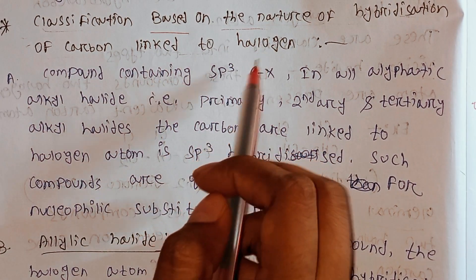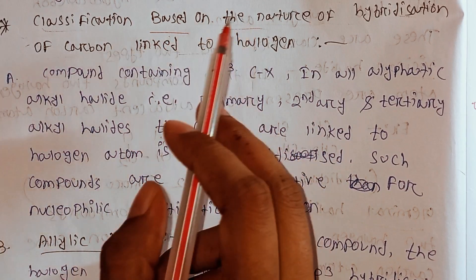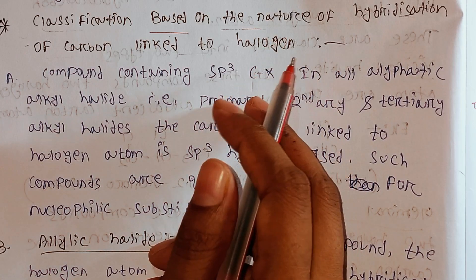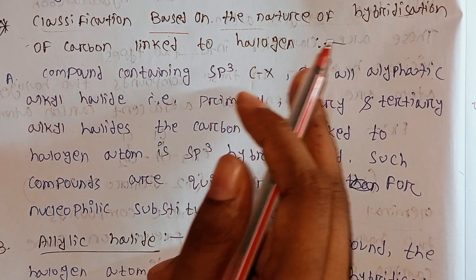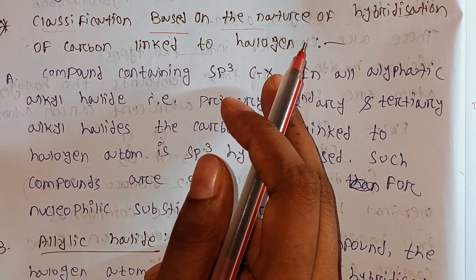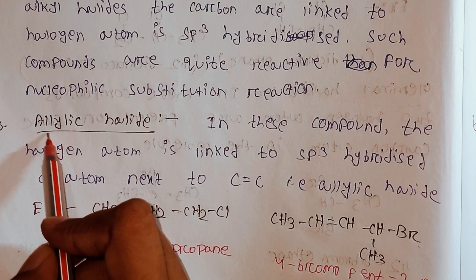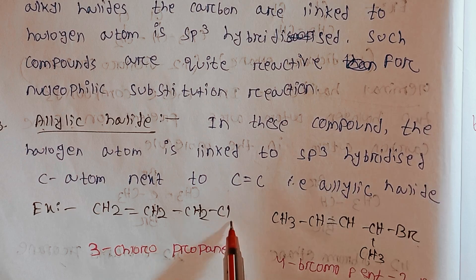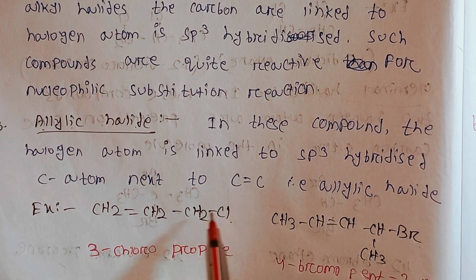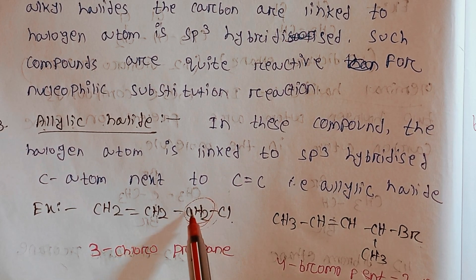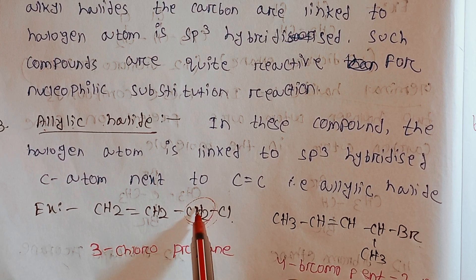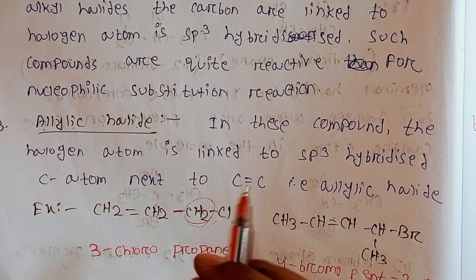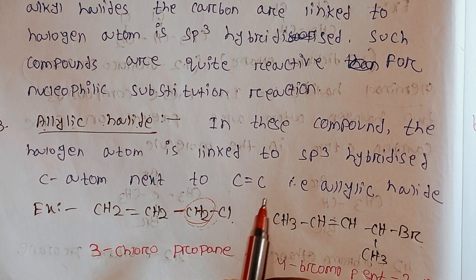The halogen atom carbon linked to halogen — the hybridization is the same thing. There are two types of hybridization: sp2 and sp3. The halogen atom is on the natural carbon. sp2 and sp3, single bond, sp3 hybridization.